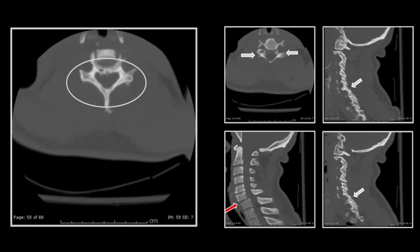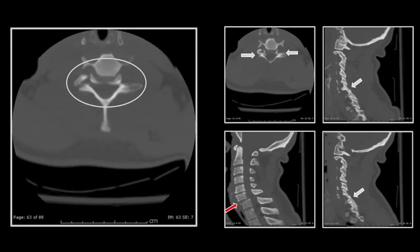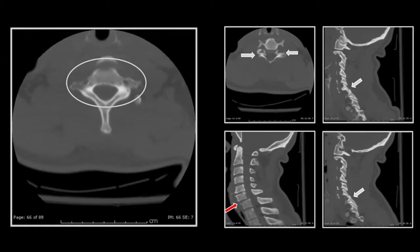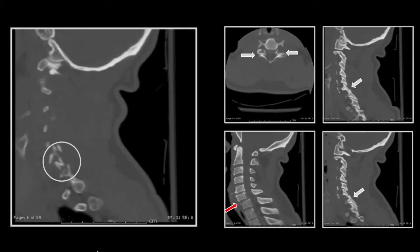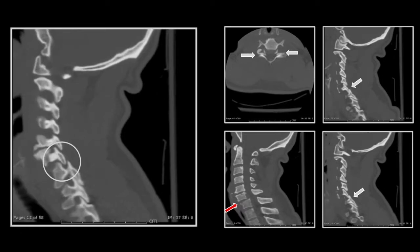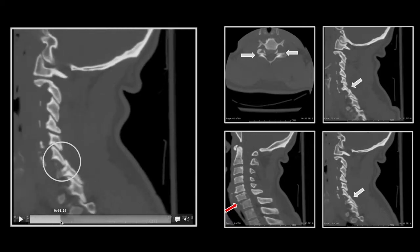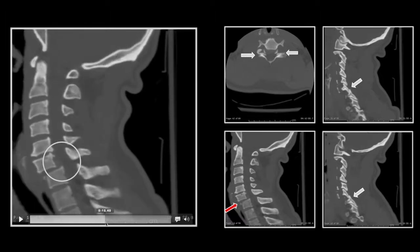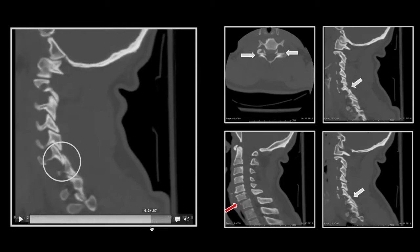This is the kind of pattern recognition that's critical on the axials — reversal of the normal relationship of the facets. On the sagittal, this is always best appreciated. You can see there is fracturing of the superior articular facet of the level below, which is a frequently associated injury. There is locking of the remainder with anterolysthesis. On the other side, we have the jumping and locking without the fracture.